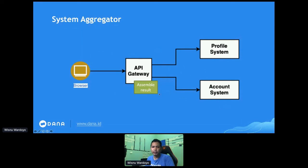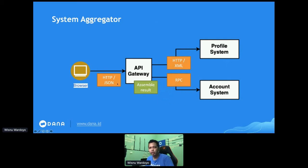This technique also helps you unify the tech stack behind the API Gateway. For example, the profile system uses HTTP and returns XML, while the account system uses RPC. The API Gateway can connect to both and assemble the result in JSON as requested by the browser — or vice versa, if the client needs a response in XML, the API Gateway can assemble the result in XML as well.